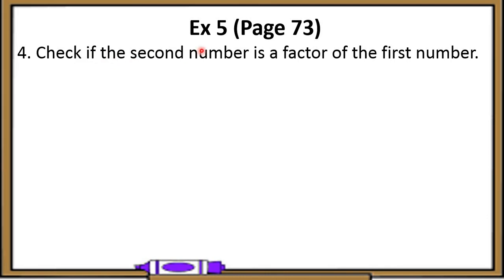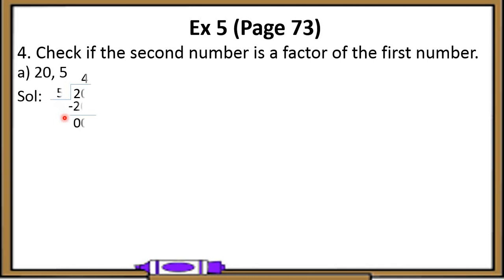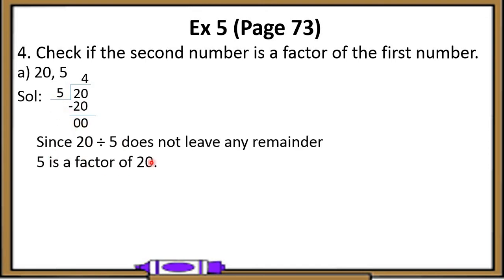Let's now do question 4 of this exercise. It says: check if the second number is a factor of the first number. To check this, we divide the first number by the second number. If it is completely divisible, then the second number is a factor of the first number, otherwise not. For part A, the numbers are 20 and 5. When we divide 20 by 5, the remainder is 0, so 5 is a factor of 20.